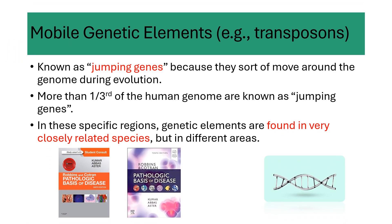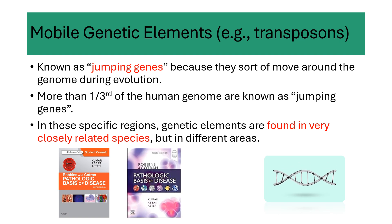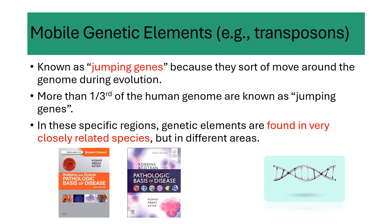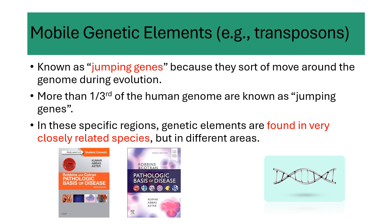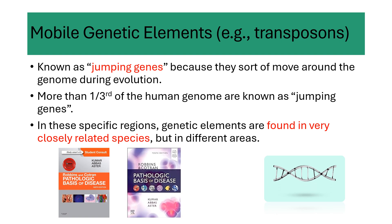Mobile genetic elements — for example, transposons — are known as jumping genes because they have the ability to move around the genome during evolution. It's like they can jump from one place to another in our DNA. More than one-third of the human genome consists of these jumping genes. In these specific regions, genetic elements are found in very closely related species such as chimpanzees, but located in different areas — like having the same book but with chapters in different places.